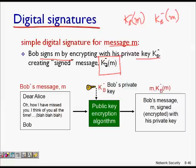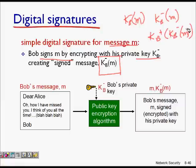If I want to show that it is Bob who signed the document, I use the public key — which everyone has. We apply the public key to the signed document, and since applying a public key to a private-key-signed message gives back message m, Bob's digital signature and authorship can be verified. This also satisfies non-repudiation: he cannot deny that he signed the document.